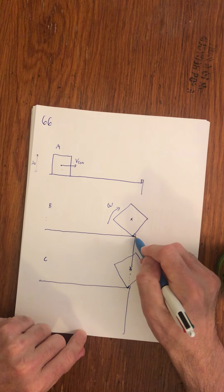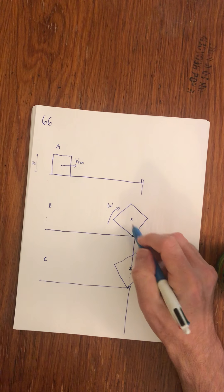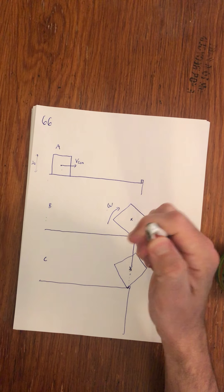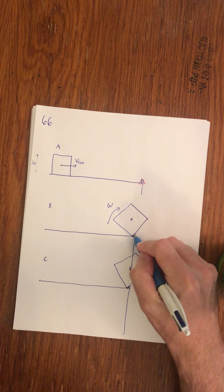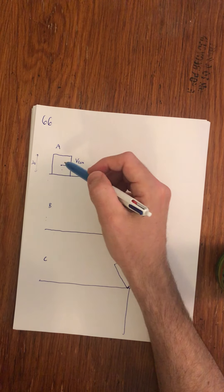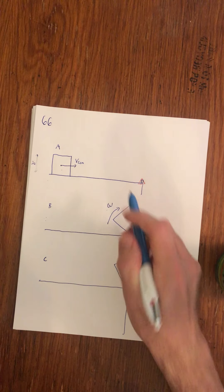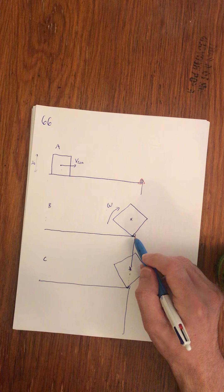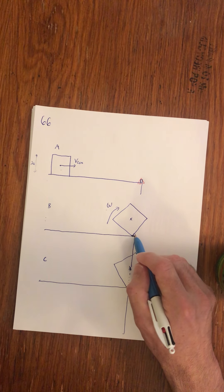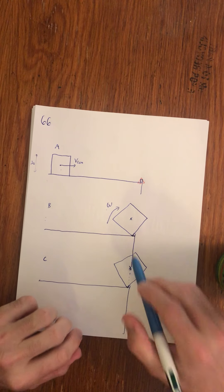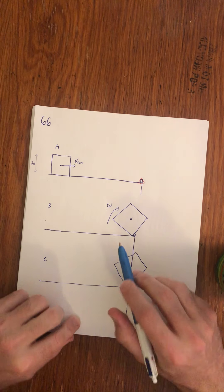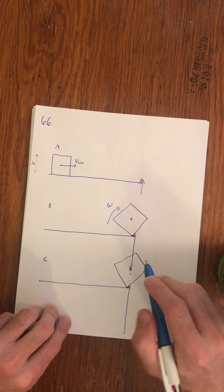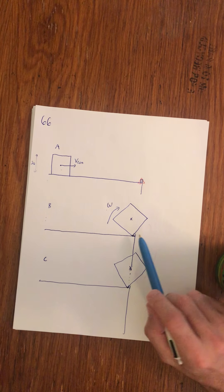You may say this thing experiences a net external torque, but the answer is no — this is the pivot point. The torque through the pivot doesn't do anything; there's no net external torque. But then from B to C, as it begins going up, this is a conservation of energy problem because gravity is a net external torque here.